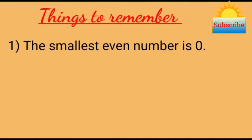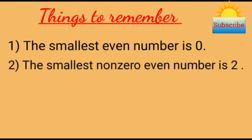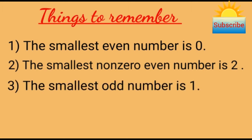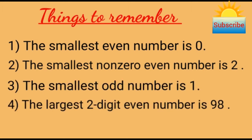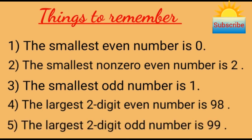The smallest even number is zero. The smallest non-zero even number is two. The smallest odd number is one. The largest two-digit even number is 98. The largest two-digit odd number is 99.